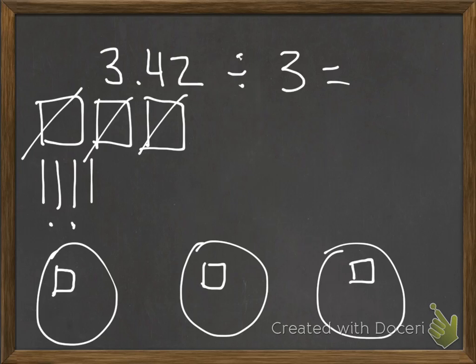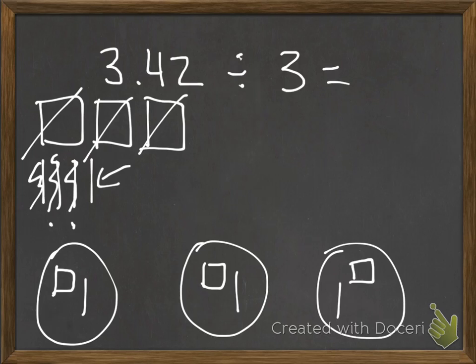Moving on to my tenths pieces: I have four tenths and three groups. I can put one tenth into each of the three groups, but I'm left with one tenth remaining. Since I can't distribute that leftover tenth equally among the groups, I regroup it into ten hundredths pieces.